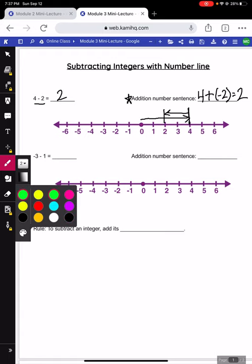Now if we compare our subtraction to our addition number sentence, we can see that we were doing 4 minus a positive 2 here. We changed to addition, and we changed the positive 2 to its opposite of negative 2. Alright, let's do another example.